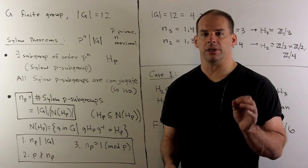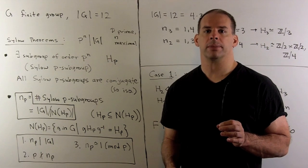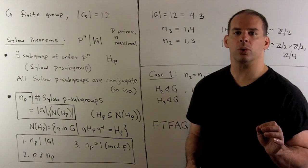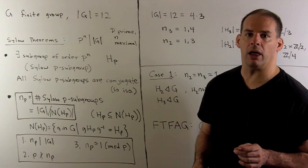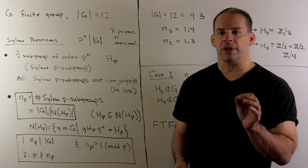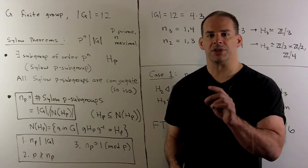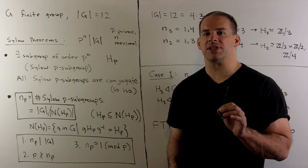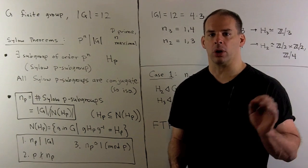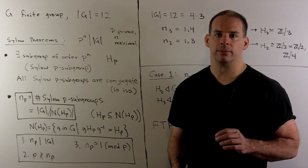As an application of the Sylow theorems, let's consider finite groups of order 12. For this part, we'll consider the abelian cases and the alternating group on four letters.